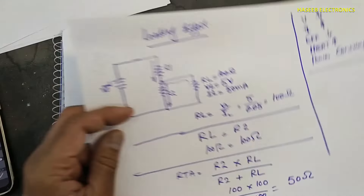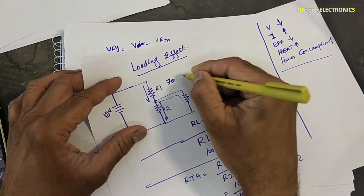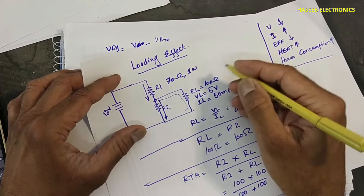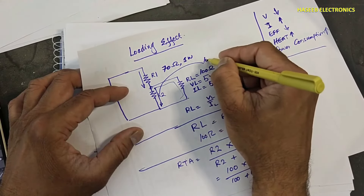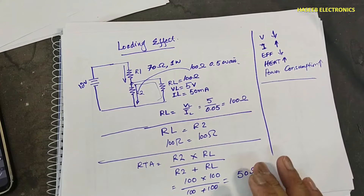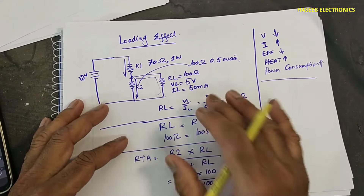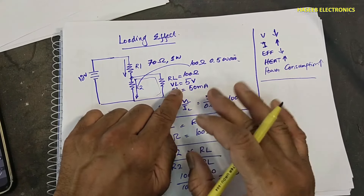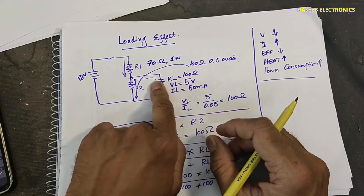Finally, we can say: R1 is 70 ohms, 1 watt; R2 is 100 ohms, 0.5 watt. This is the proper calculation for a voltage divider network to drive a load with rated voltage. But if we disconnect the load, the output voltage will change.